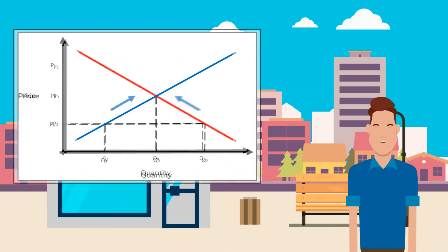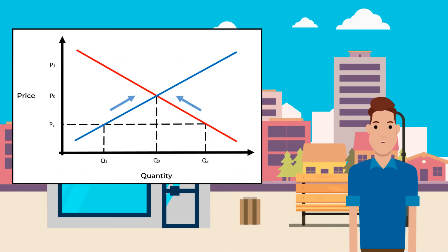When the market price p2 is lower than the market equilibrium price, demand exceeds supply. The quantity q1 will be supplied, but quantity q2 will be demanded. There will be upward pressure on the market price as people will be willing to pay more, and suppliers will charge a premium on their stock. This is excess demand.